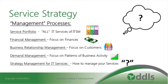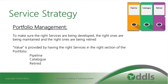Portfolio management is there to make sure the right services are being developed, the right ones are being maintained, and the right ones are being retired. As shown in the diagram with the pipeline, catalogue, and retired sections — value is provided by having the right services in the right section. An IT service residing in the catalogue that is not producing value and is costing money to maintain may be moved to the retired section, which financial management will be happy about.